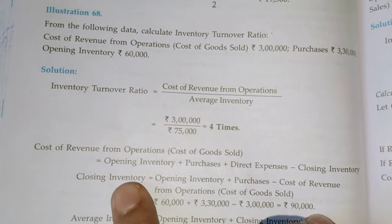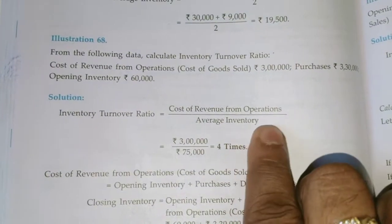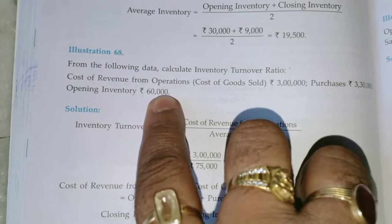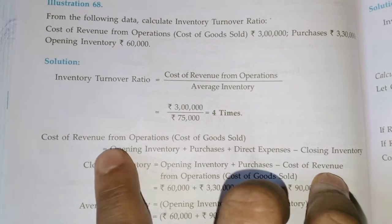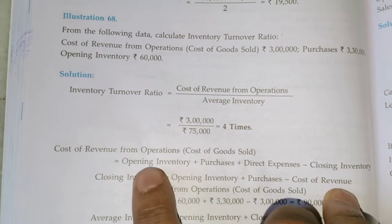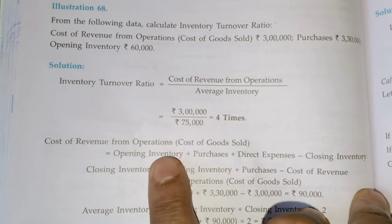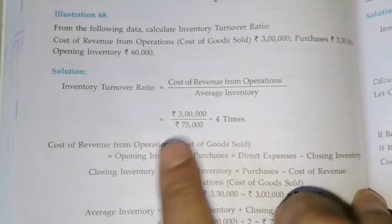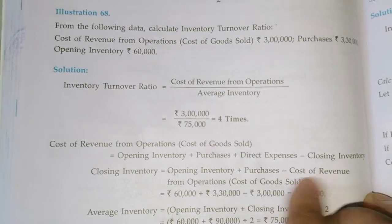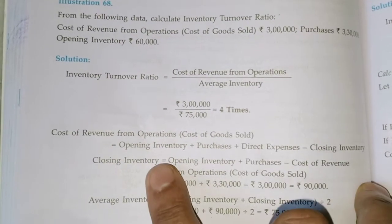We need to calculate closing inventory because we need average inventory. Only opening inventory is given in the question; closing inventory is not given. Using the formula — Opening + Purchases minus Cost of Revenue from Operations — closing inventory comes out to 90,000.